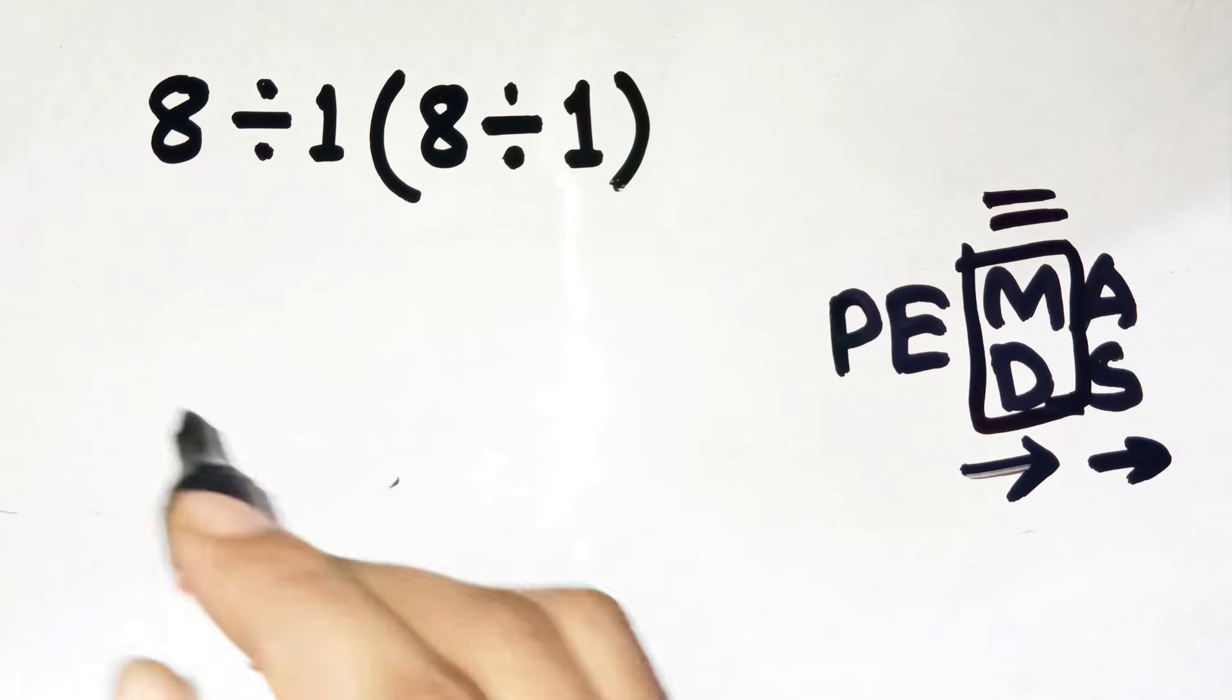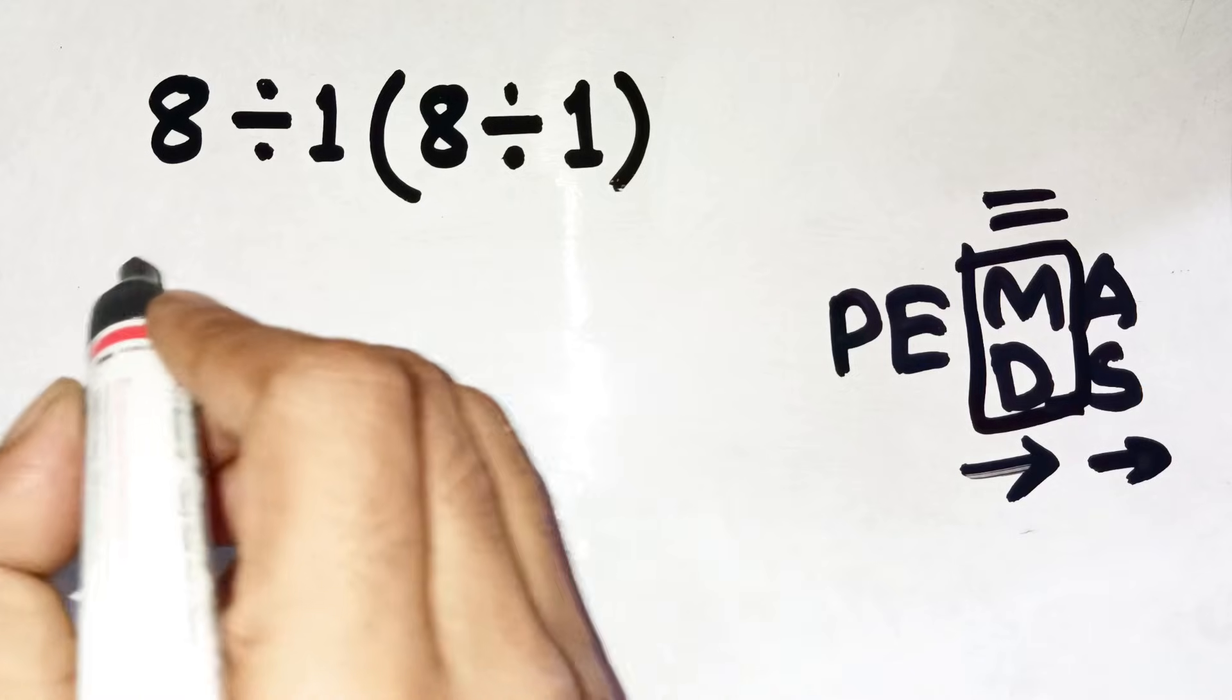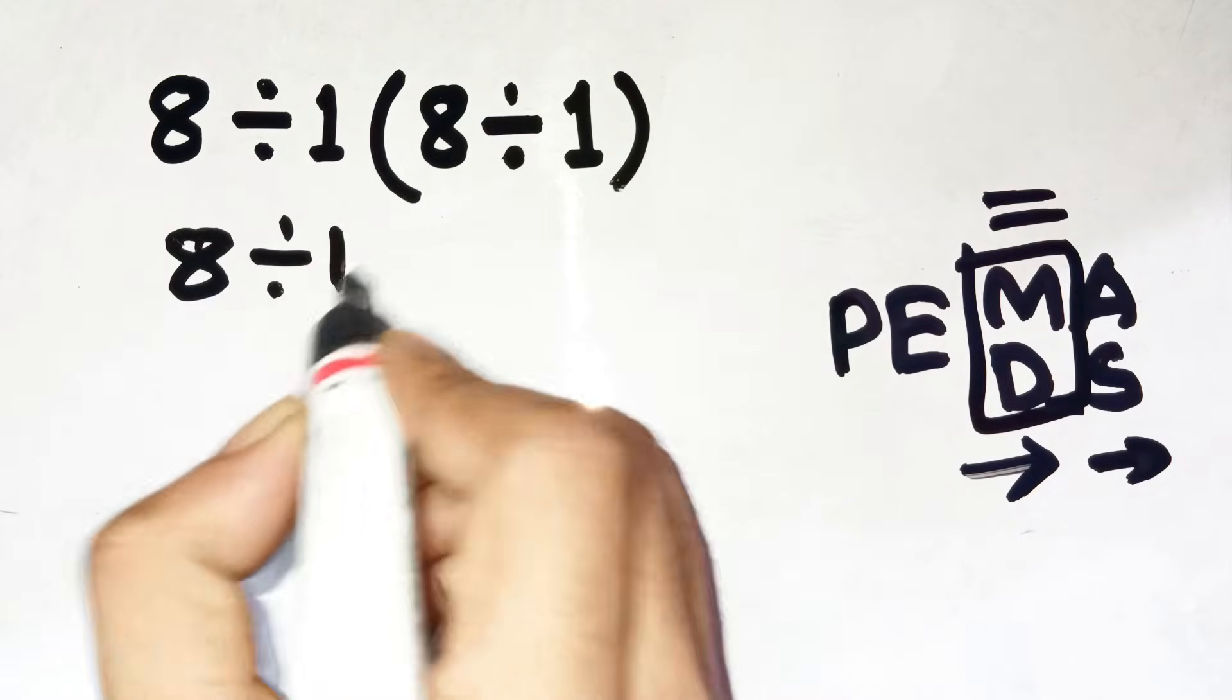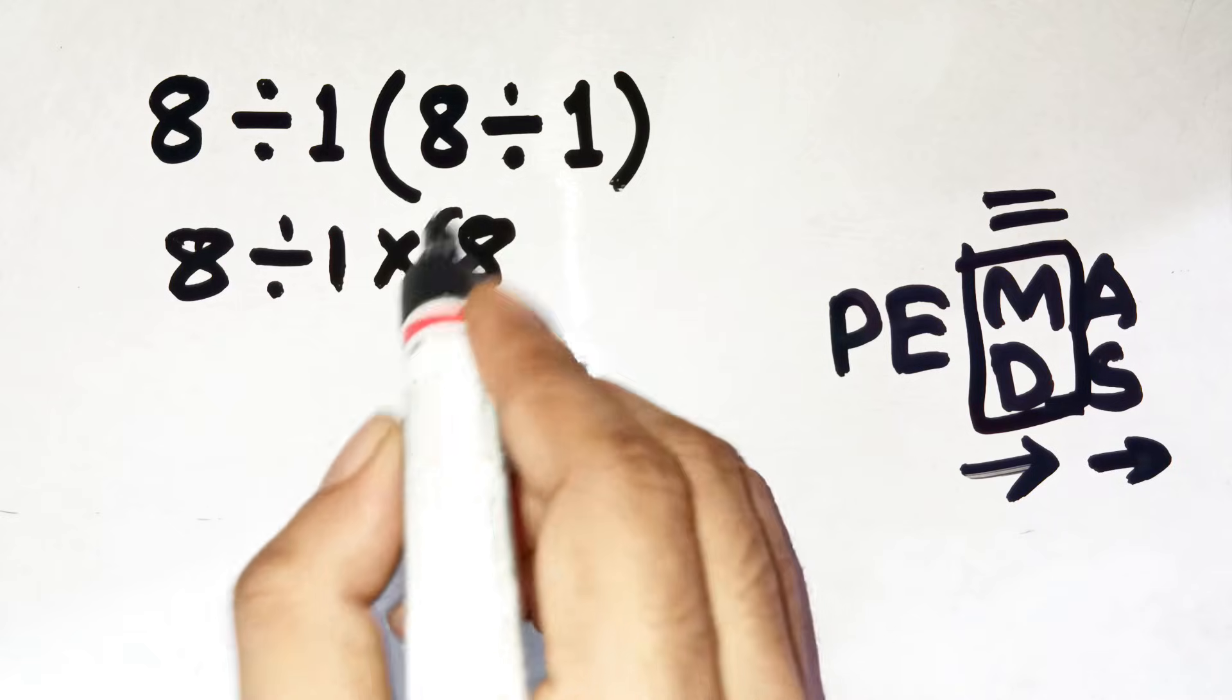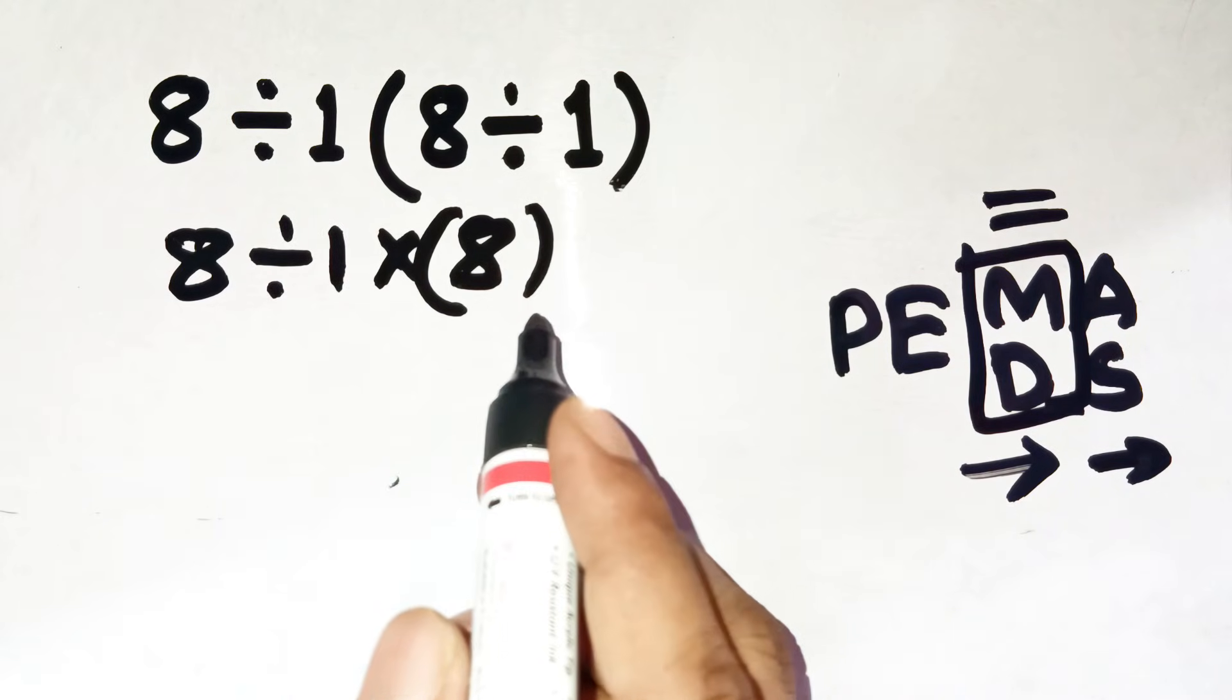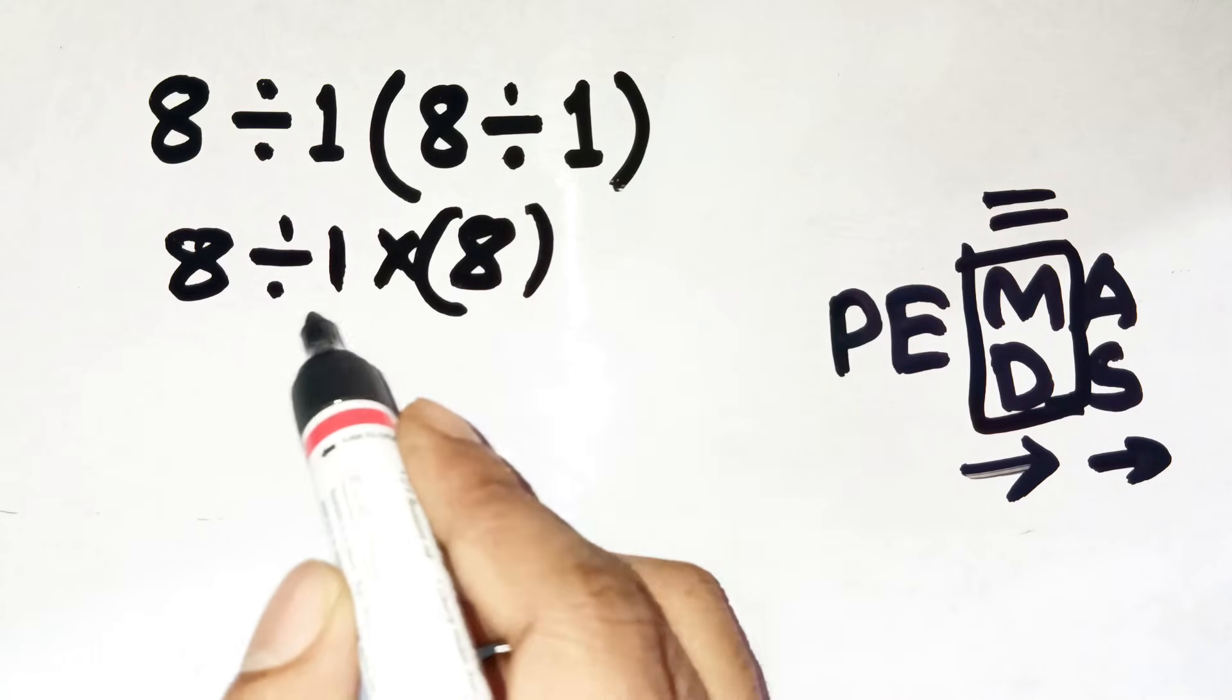Let's rewrite the expression gently in our heads. 8 divided by 1 times 8. Step 1, do the parentheses. So 8 divided by 1 equals 8. Now the whole expression becomes 8 divided by 1 times 8.